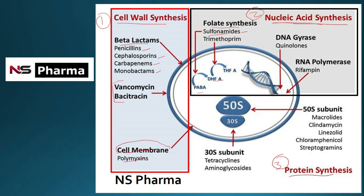Through inhibition of PABA to DHFA conversion, sulfonamides inhibit folate synthesis, and since folic acid is necessary for nucleic acid synthesis, nucleic acid synthesis is also inhibited. Trimethoprim inhibits the conversion of dihydrofolic acid into tetrahydrofolic acid, thereby inhibiting folate and nucleic acid synthesis. DNA gyrase inhibitors — such as quinolones (e.g., nalidixic acid, ciprofloxacin) — also cause nucleic acid synthesis inhibition.